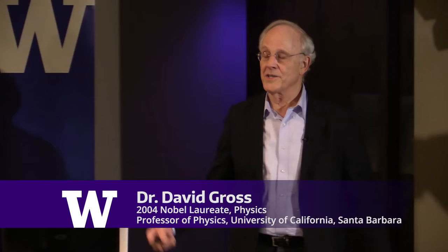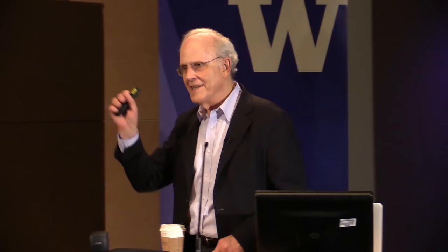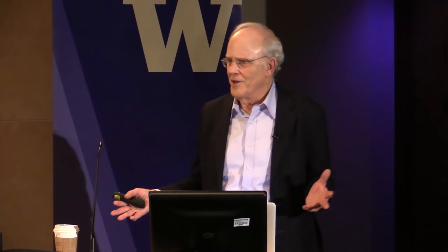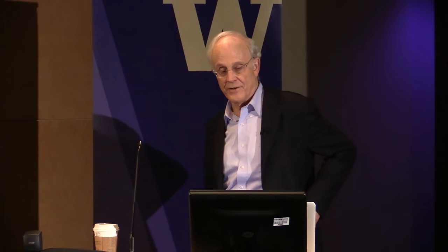There are experiments. Astronomers have discovered that most of the matter in the universe is not material made out of quarks and leptons. Some other kind of matter. Neutrinos have a mass. There's a lot of matter in the universe, and you'd think there should be an equal amount of antimatter. But there doesn't seem to be. There's the dark energy, cosmic acceleration.